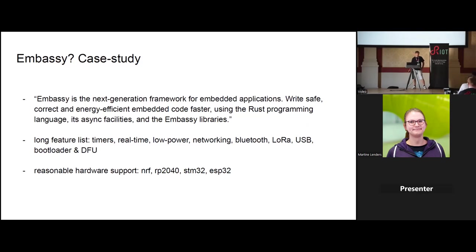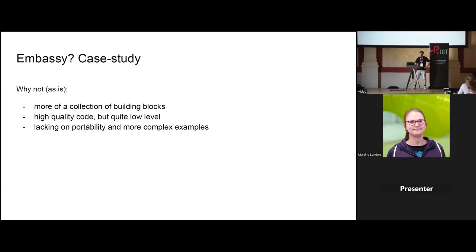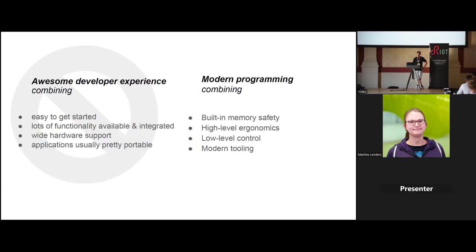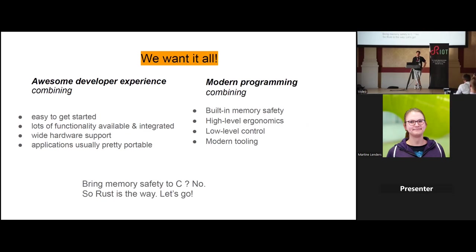Reasonable hardware support, so it sounds good. But coming from RIOT, we're used to a lot. It turns out Embassy is actually more like a collection of building blocks - the application developer takes the main loop and starts stuffing things in there. Embassy has very high quality code but it's also very low level, the resulting applications are not very portable, and it's lacking in more complex examples. It's written in Rust, it has all the modern Rust stuff, but it does not have the awesome developer experience we want - the one we're used to and can't go without.